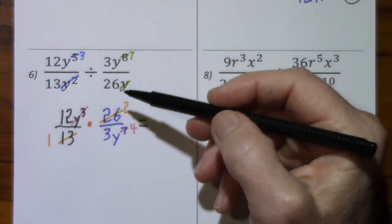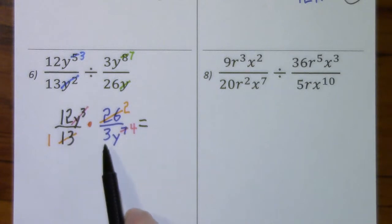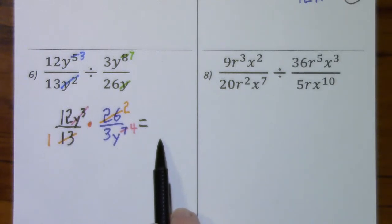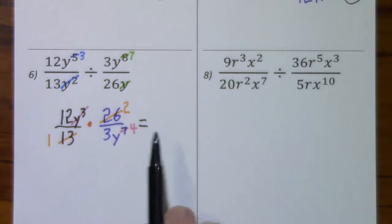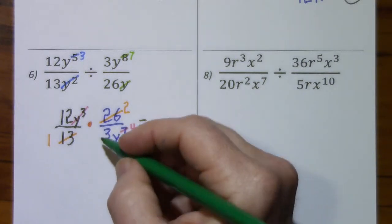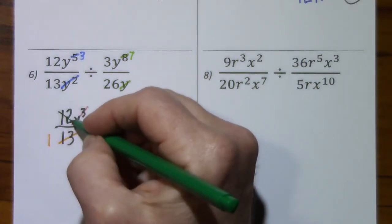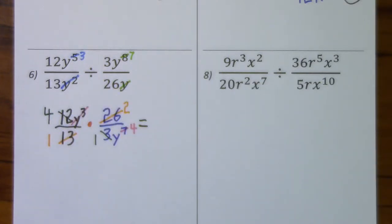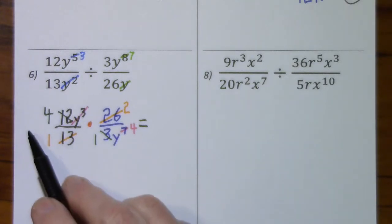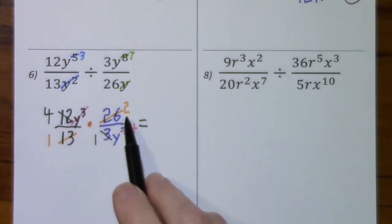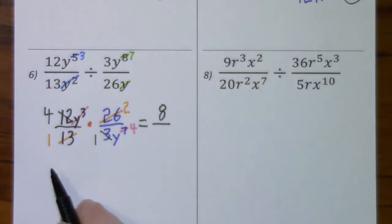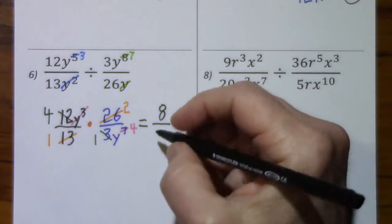So we're left with — there's still a common factor here. If I didn't catch it at this point, once I got out here I would just have to do more reducing, but I prefer to cancel right now. So divide by 3, divide by 3. We've simplified all we can: 4 times 2 leaves us with 8 in the numerator and y to the fourth in the denominator.